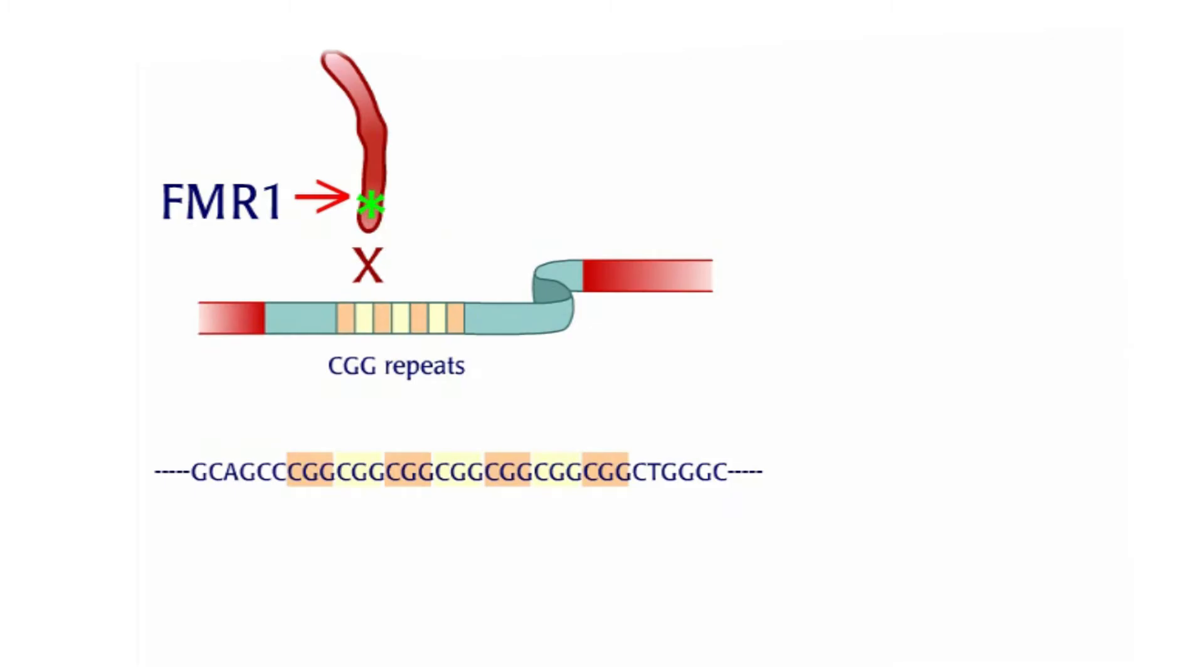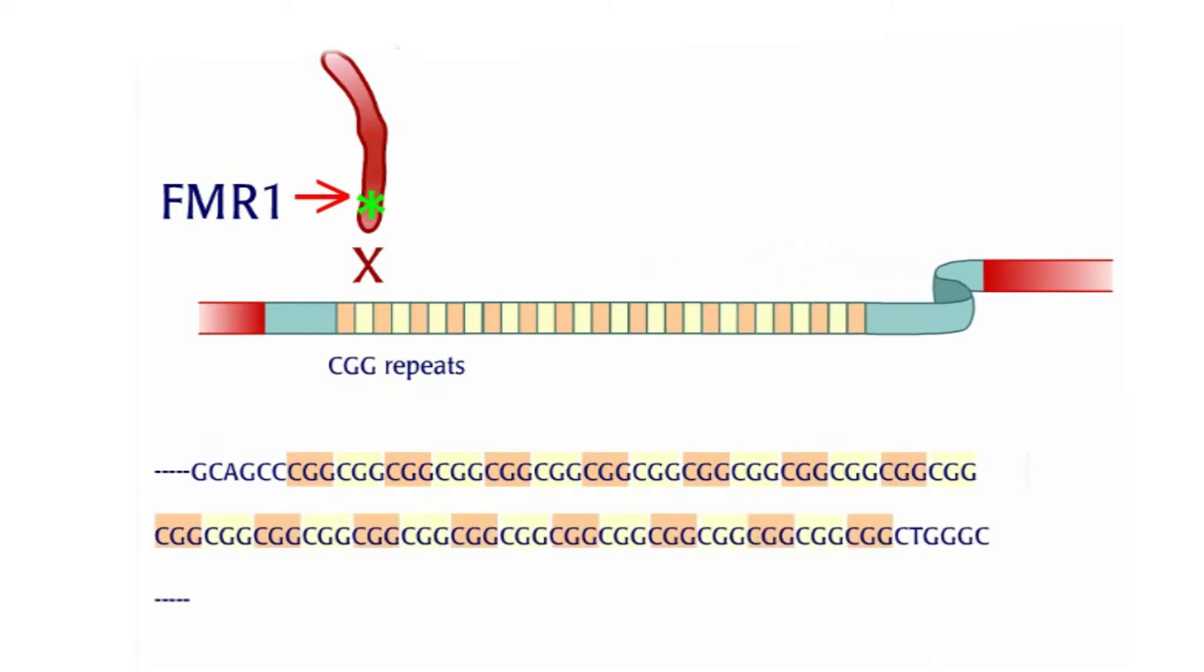People who have Fragile X carry an FMR1 gene that is much bigger than usual. The gene is bigger in a region where three bases are repeated.